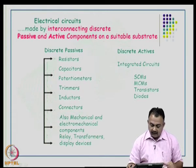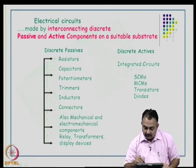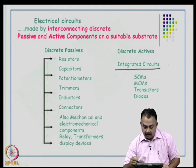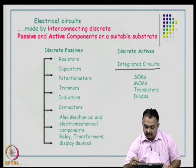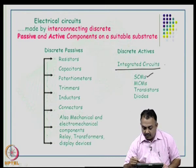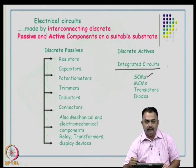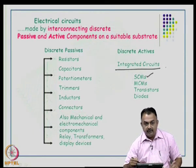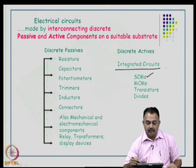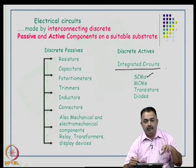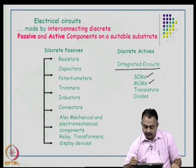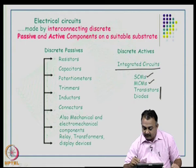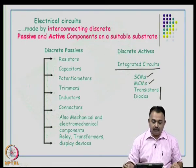The basic active devices include integrated circuits, individual ICs, microprocessors, microcontrollers, and various transistors. We can also have single-chip modules mounted on the board — BGA, CSP, and PGA packages like Intel or AMD processors are single-chip modules. You can also have multi-chip modules, as well as various transistors and diodes. These are the basic active devices that could be used in a design.